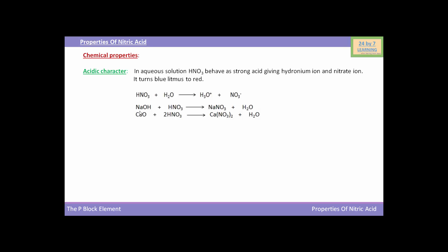Here is another reaction. NaOH, which is a base, when reacted with HNO3 yields NaNO3 (sodium nitrate) and water. While CaO (calcium oxide), also a base, when reacted with HNO3 yields Ca(NO3)2 (calcium nitrate). So when HNO3 reacts with a base, it provides nitrate compounds and water, showing its acidic character.